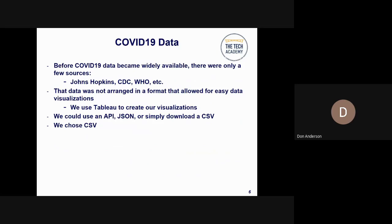Before COVID-19 data became widely available, there were only a few sources: Johns Hopkins, the Centers for Disease Control (CDC), and the World Health Organization (WHO). That data was not arranged in a format that allowed for easy data visualizations. We use a software package called Tableau to create our visualizations. The data came in a variety of formats — we could use an API, JSON, or simply download a CSV. To get started, we chose the CSV route.